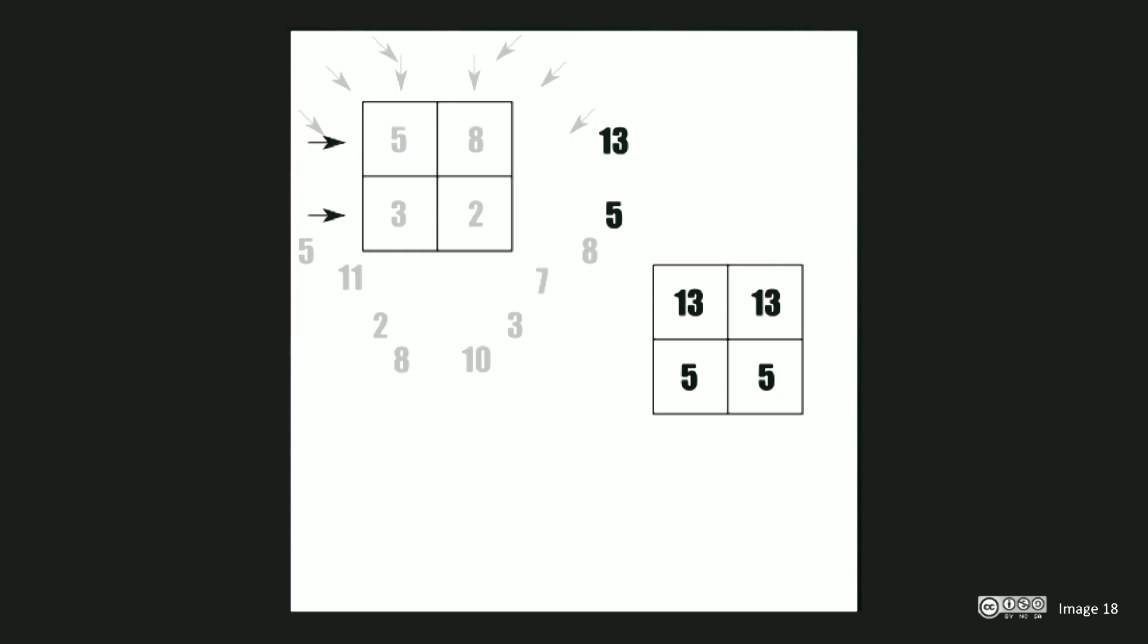We then proceed to the second projection and add the values of this projection to our current result. In our case, we then add 8 from the projection to the existing value of 13 in the top right corner to give us 21. We then proceed with the projected value of 7 and add this to 13 and 5, resulting in 20 and 12. This projection is completed by adding 3 from the projection to the existing value of 5 to give 8.